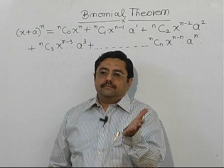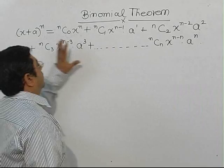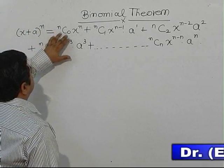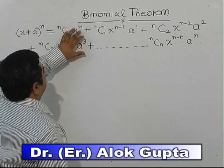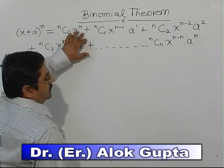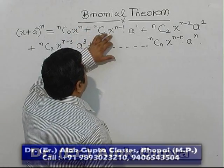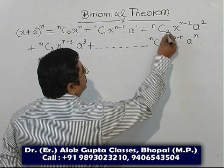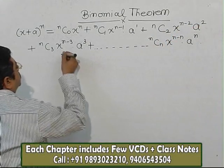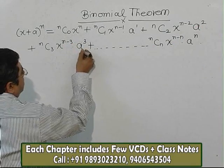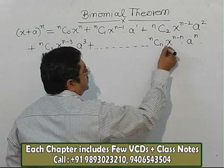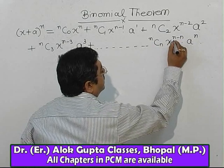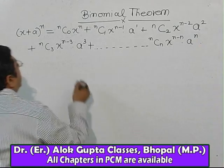In binomial theorem, coefficients are in the expansion of (x + a) to the power n. It is nC0 · x^n · a^0 — anything to the power 0 is 1 — plus nC1 · x^(n-1) · a^1, plus nC2 · x^(n-2) · a^2, plus nC3 · x^(n-3) · a^3, and so on till nCn · x^(n-n) · a^n. Since n minus n is 0, and anything to the power 0 is 1.